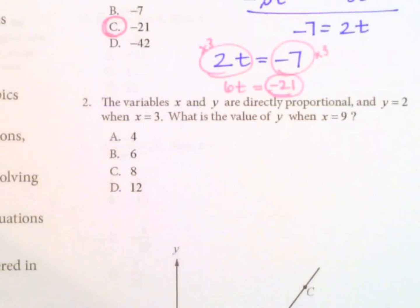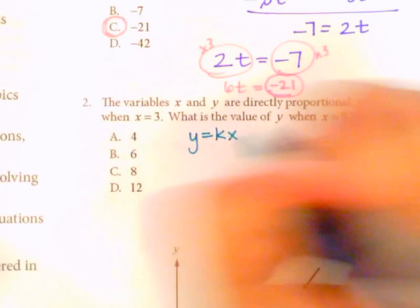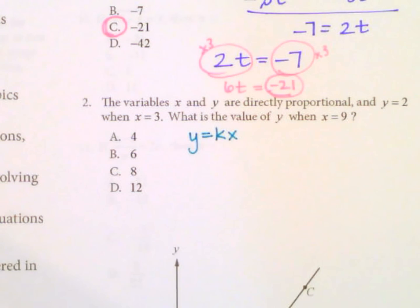Number two. The variables x and y are directly proportional. So that means this is a direct variation. A direct variation looks like this: y equals kx. There's some constant number that you can multiply x by to get your y values. So this is the relationship between x and y.